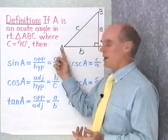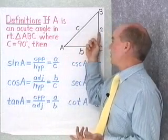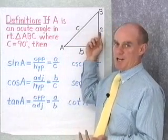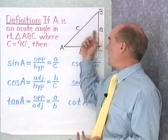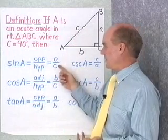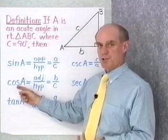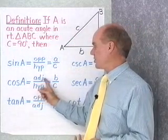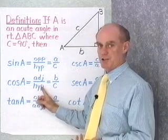When I look at angle A, the side that's opposite angle A is side A. So it's the ratio of side A to the hypotenuse C, A over C. The definition for cosine is the ratio of the length of the adjacent side to the hypotenuse.